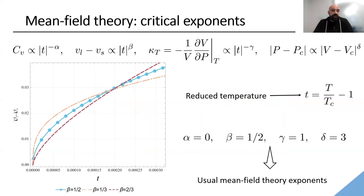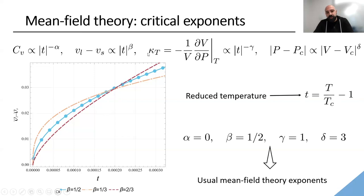Since we have a critical point, we study the behavior of thermodynamic quantities near it using critical exponents. These exponents describe universality classes without requiring a microscopic description. We computed the heat capacity scaling with reduced temperature T/T_c − 1, the difference between reduced volumes for large and small phases, the isothermal compressibility, and the difference between critical and actual pressure versus volume. We retrieved the usual mean field theory exponents — always surprising since the equation of state is not exactly Van der Waals, yet the critical exponents are identical.